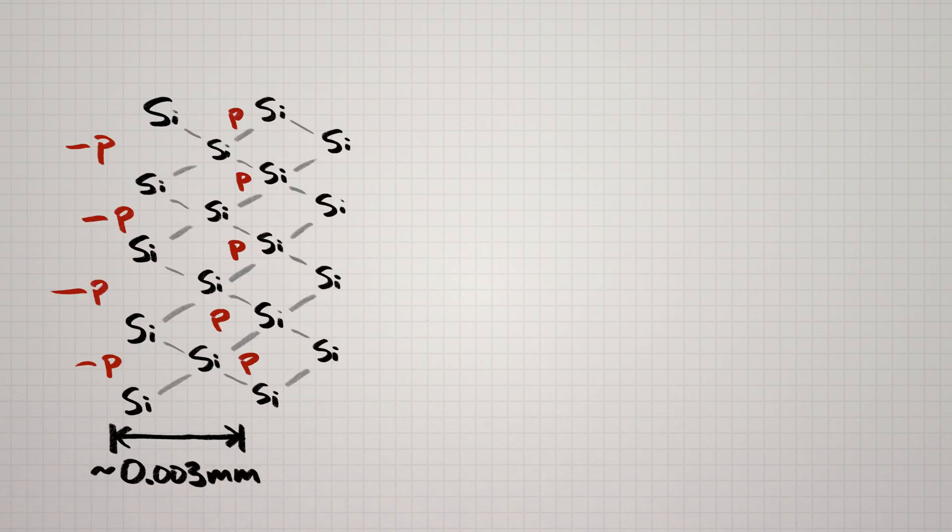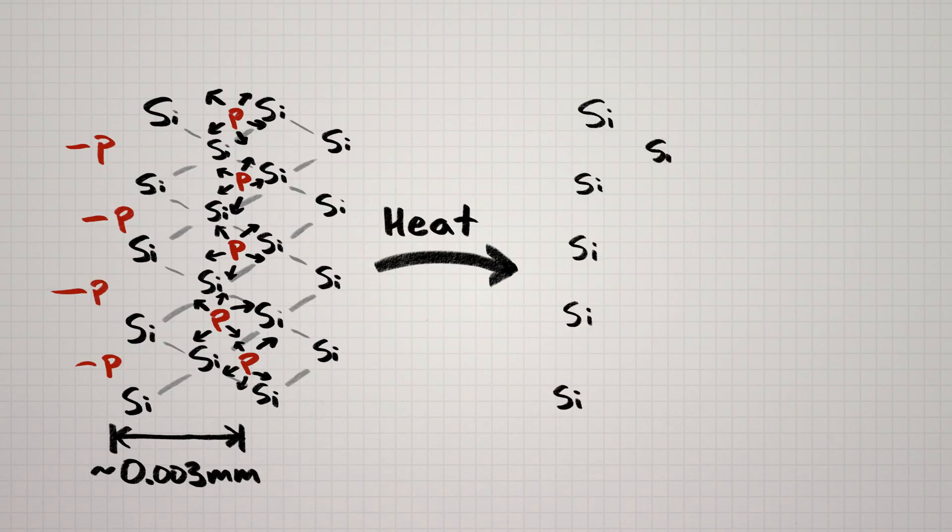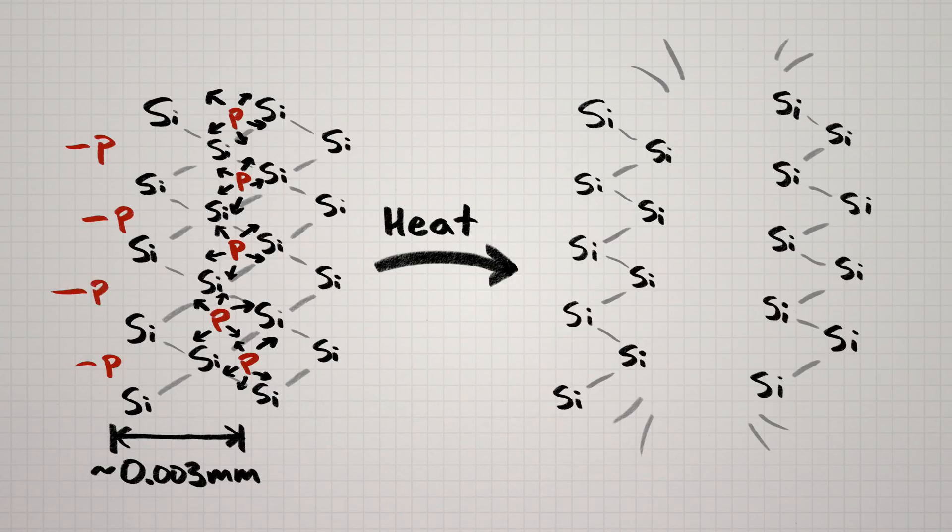once inside the silicon crystal lattice, the protons kind of push it apart and create stress. If you heat the whole thing up, a wafer will break right off, cleanly cleaving along the crystal lattice lines where the protons were.